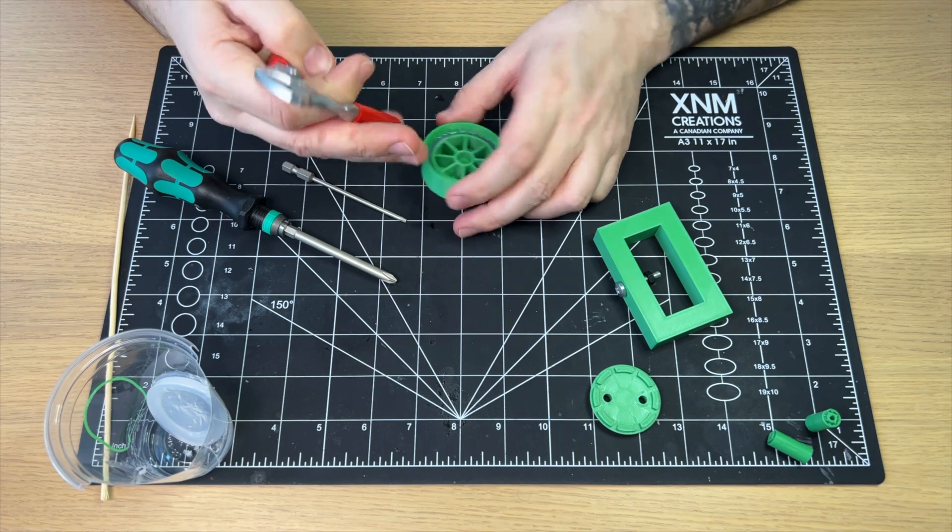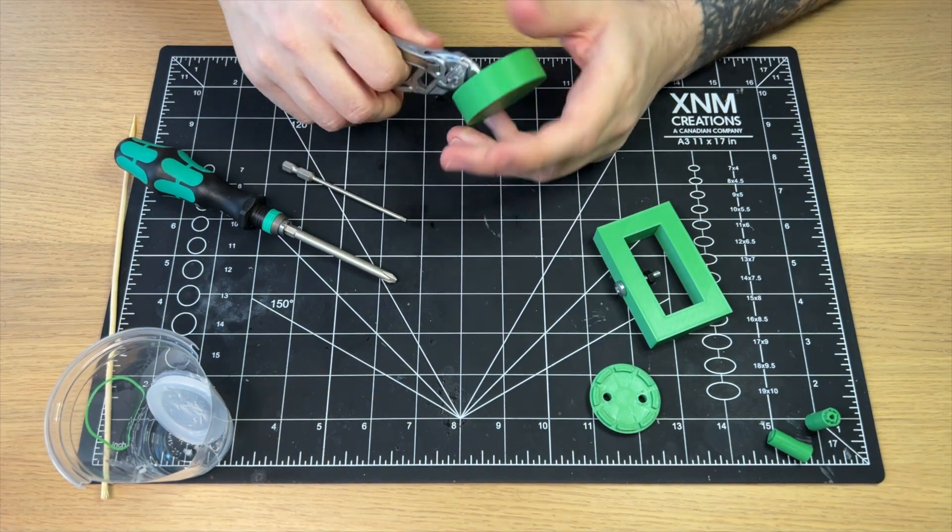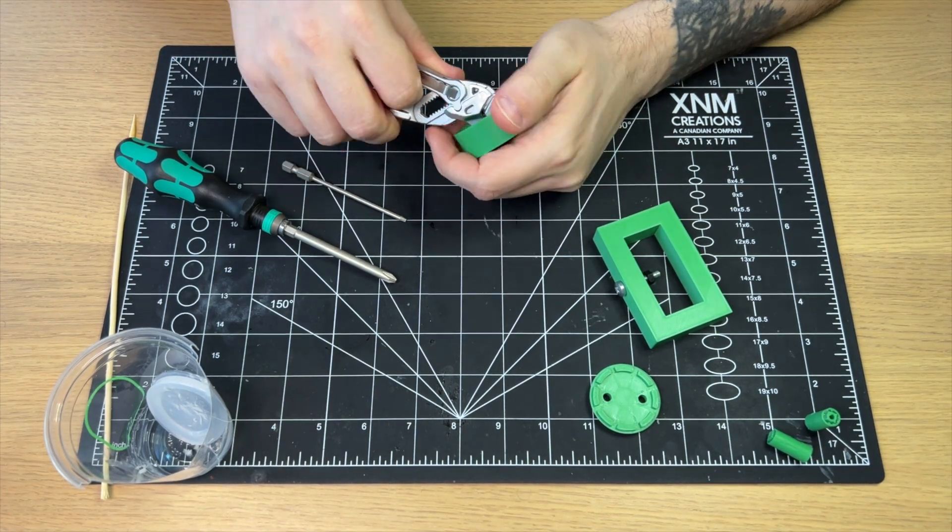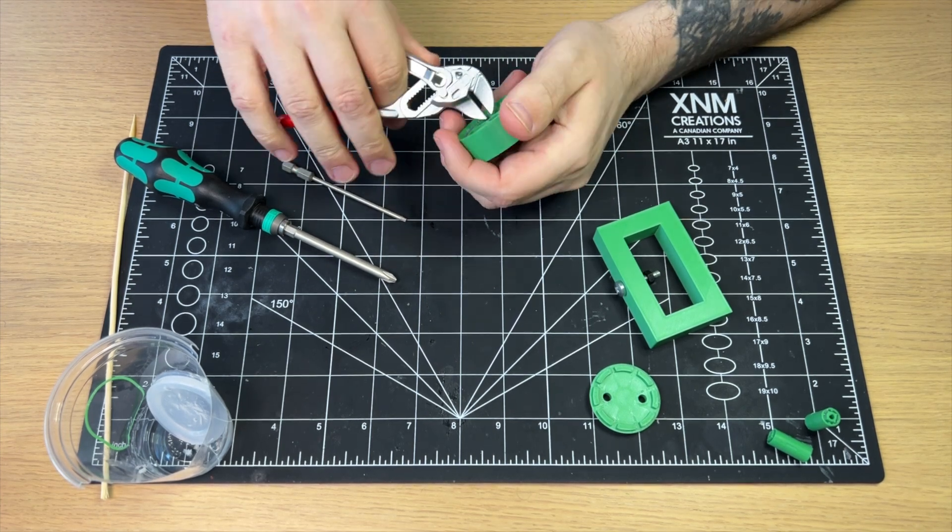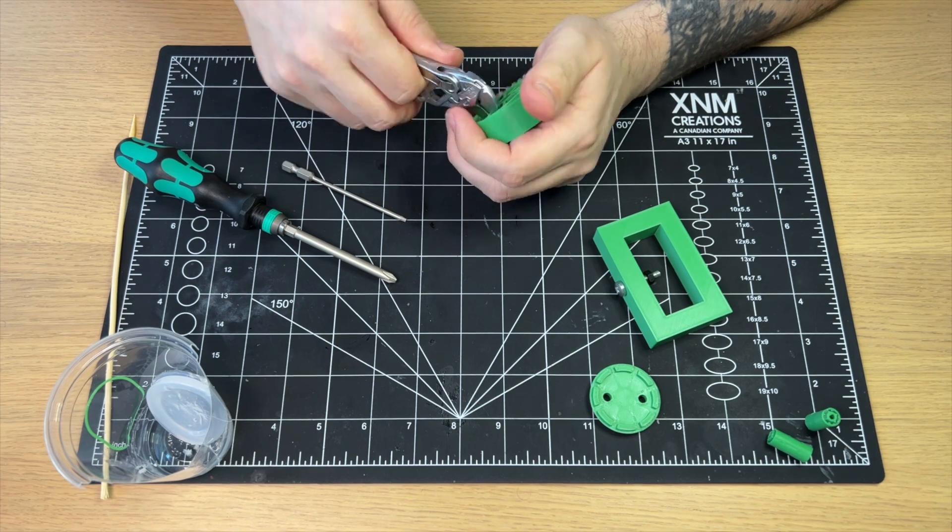Now that the plate has been removed, it's time to take the rim out of the form. Using mini pliers can be very helpful for this task. It's important to work carefully, pulling from different sides to get the best results.